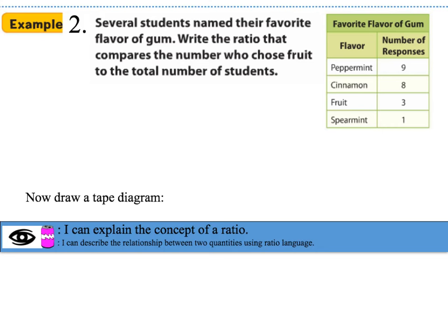For example 2, several students named their favorite flavor of gum. Write a ratio comparing the number of students who chose fruit to the total number of students. This is a part-to-total ratio because fruit-flavored gum is part of the total. To find the total, add peppermint plus cinnamon plus fruit plus spearmint, which gives 21.